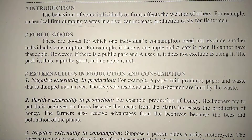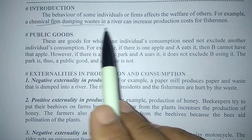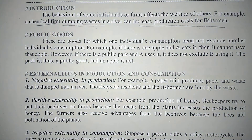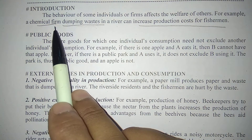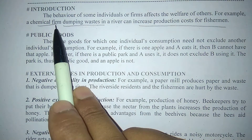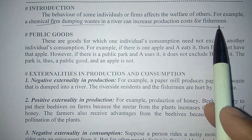Suppose एक chemical firm है जो अपने wastage को river में dump कर देती है, जिससे fish catch करने वाले लोगों को loss हो रहा है। Number of fish कम हो रही है pollution से, या उनका खर्चा बढ़ रहा है। तो हम कहेंगे कि इस chemical firm ने chemicals का production करने से एक negative externality generate की, जिससे fishermen affect हो रहे हैं।